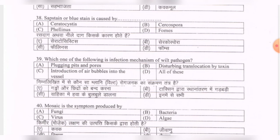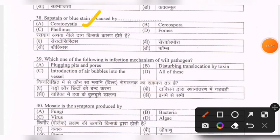Next question: sap stain or blue stain is caused by — options are Ceratocystis, Cercospora, Phellinus, Fomes. The correct option is the first one — Ceratocystis.